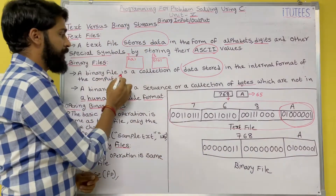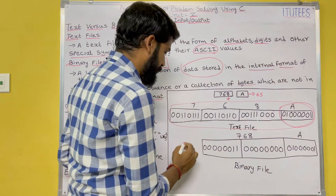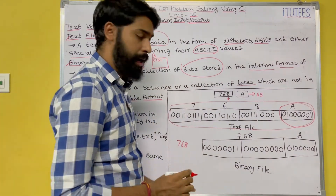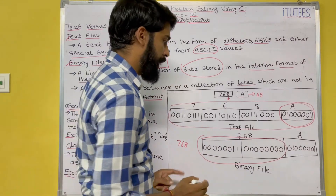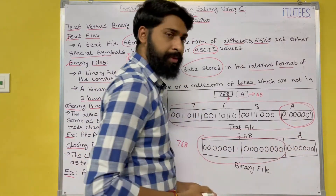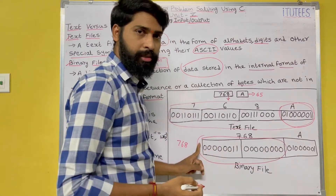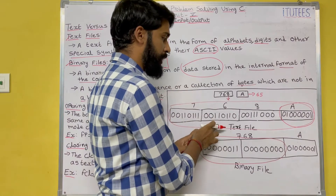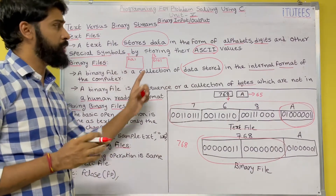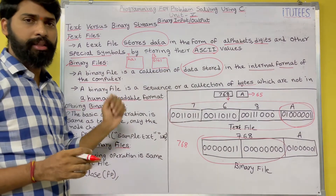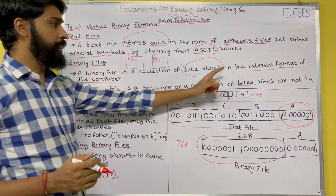Coming to binary files: a binary file stores data in the internal format of the computer. For example, to represent 768 in binary, this is its binary representation, and similarly this is the binary representation of 'a'. So if you select a binary file to store '768a', the data is stored like this. If you select a text file, the data is stored using ASCII values.